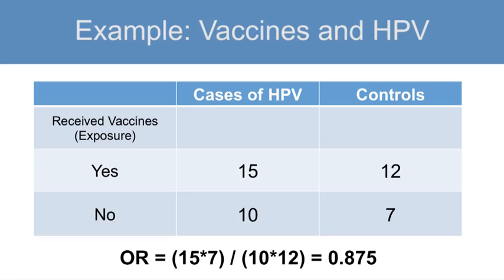A total of 25 cases and 19 controls were identified. Data obtained from the cases and controls found that 15 cases and 12 controls had received the vaccine.